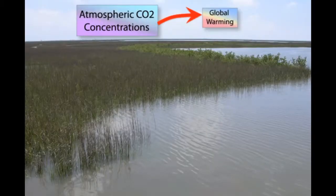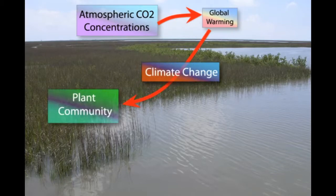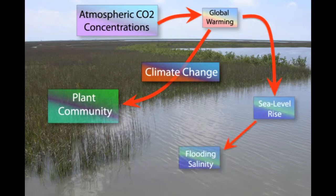CO2, being a greenhouse gas, will contribute to global warming and changes in climate, which will affect plant communities. Rising global temperature also contributes to sea level rise, which will alter flooding and salinity regimes, affecting wetland plant growth and distribution.